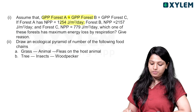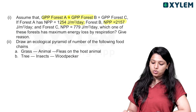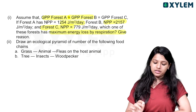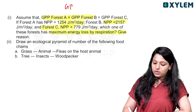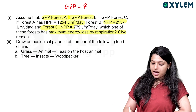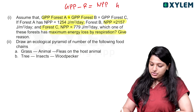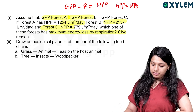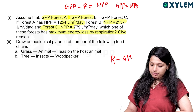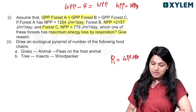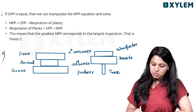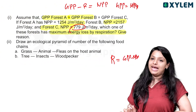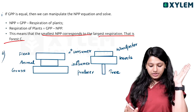For forests A, B, and C: GPP is equal for all three. Forest A has NPP = 1250 joules per meter squared per day; Forest B has NPP = 2157; Forest C has NPP = 779. Which forest has the maximum energy loss by respiration? Since GPP = NPP + R, then R = GPP − NPP. The smallest NPP corresponds to the largest respiration, so Forest C has the maximum energy loss by respiration.